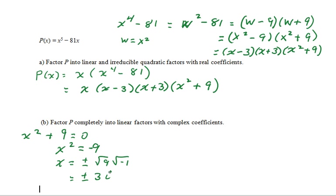And so, we can actually factor one more step. We'll have the initial three factors, the x times the x minus 3 times the x plus 3, but because 3i is a zero of x squared plus 9, one factor will be x minus 3i.